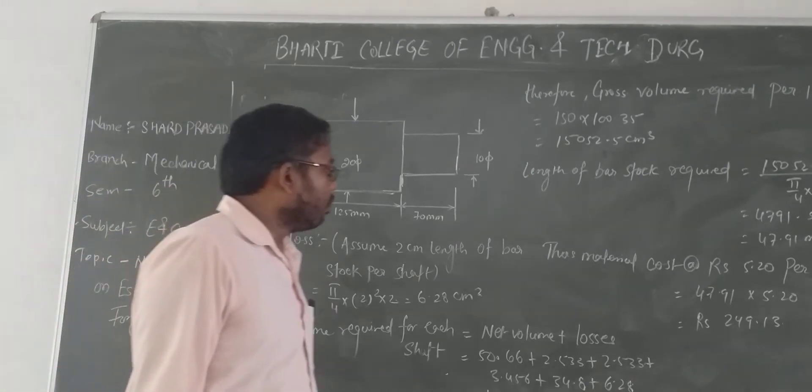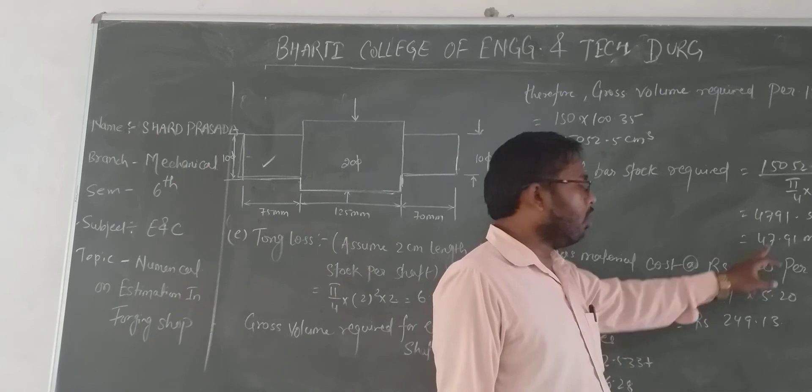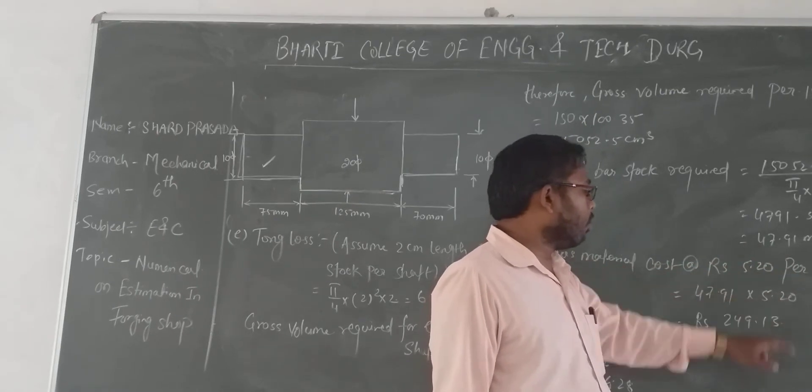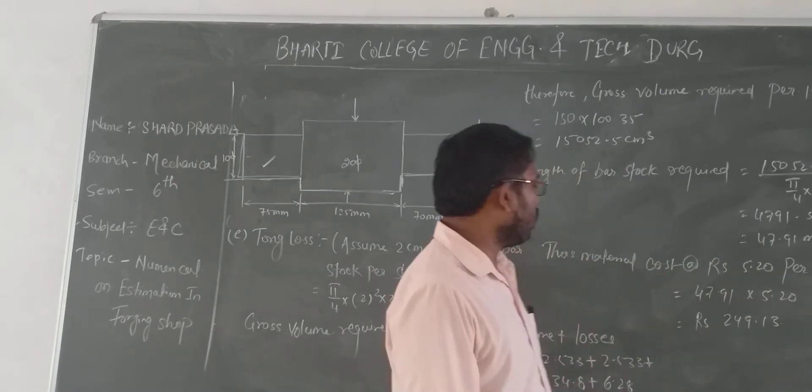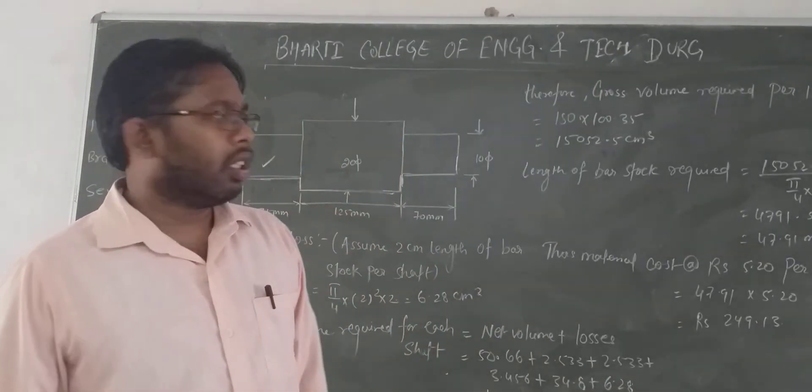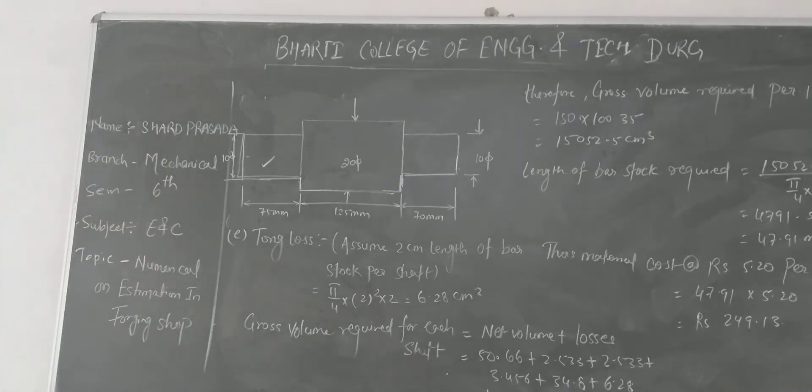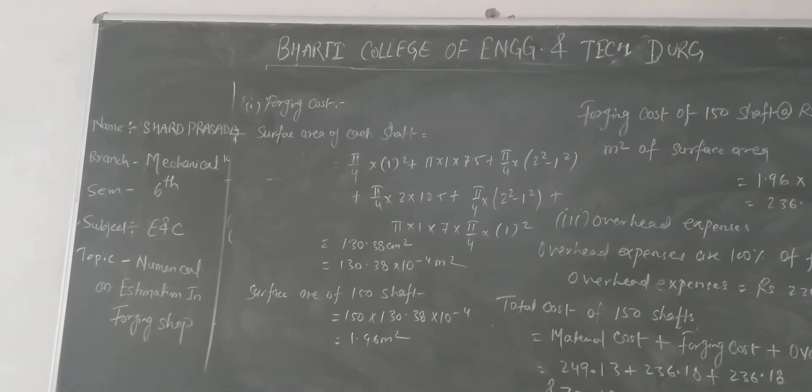The material cost at 5.20 per meter: multiply the length value by 5.20. So 47.91 × 5.20 equals 249.13 rupees. This is the material cost.